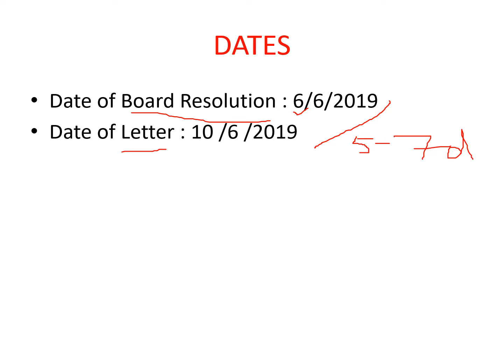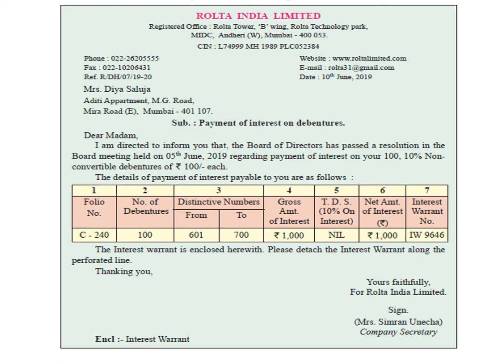The board meeting was on 6th June and within 4 days — on 10th June — the secretary is writing the letter regarding interest warrant payment. In rough work, two things: write the dates and the important points which need to be covered in the letter. With that assumption in place, let's move on to the letter.